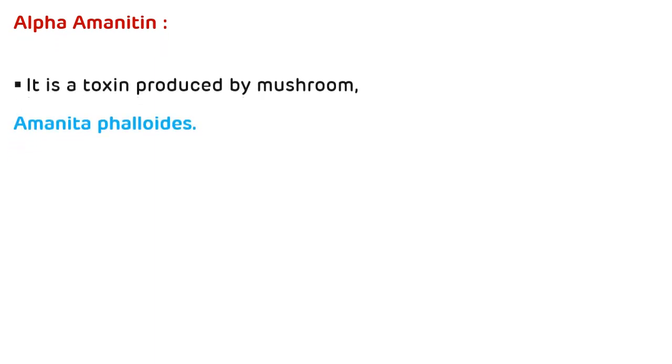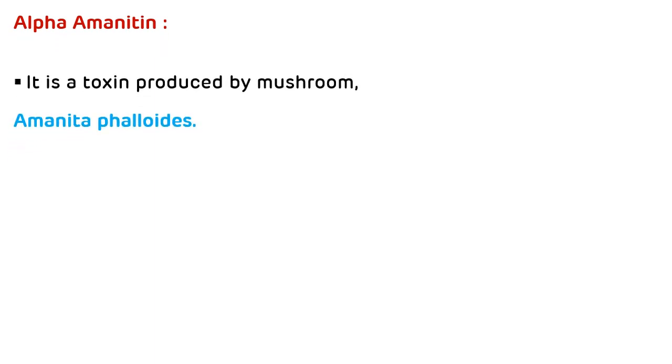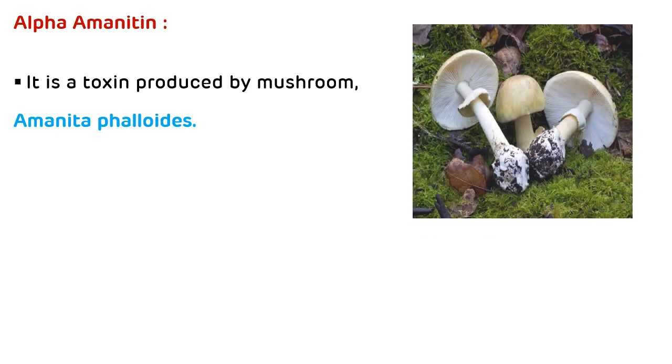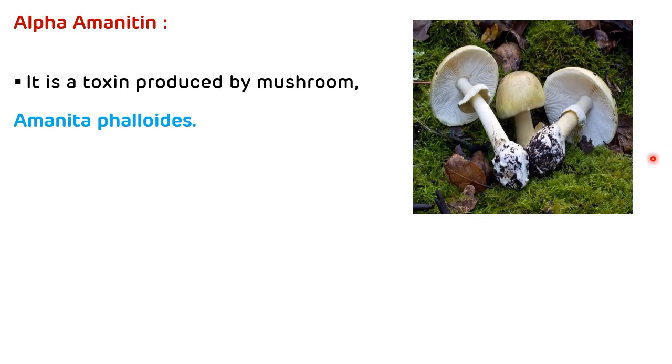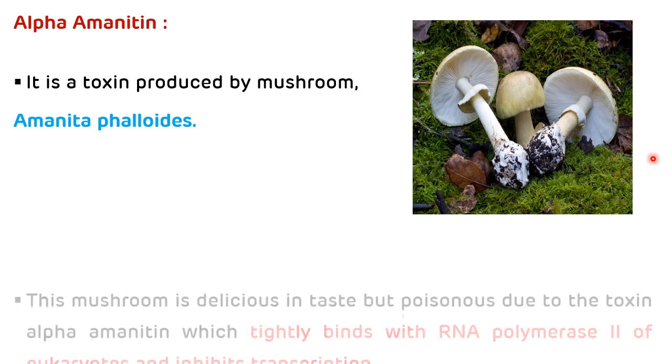The third example of an inhibitor of transcription is alpha-amanitin. Alpha-amanitin is a toxin produced by a mushroom known as Amanita phalloides. This is the picture showing the mushroom Amanita phalloides.